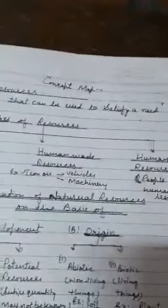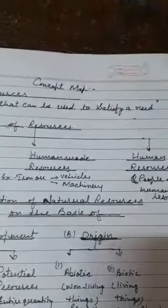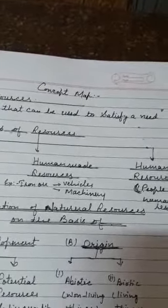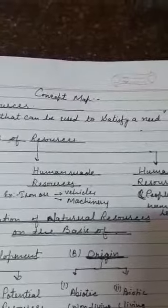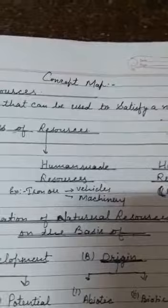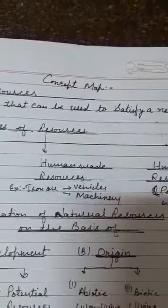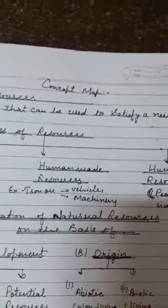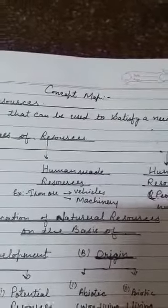Second is human-made resources. Human-made resources means some resources are changed from one resource to another by human activities. Just like iron — this is a mineral, iron ore. Jahan se milta hai through mining, just a raw material hume milta hai, extract kiya jata hai.